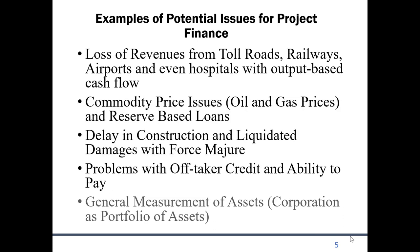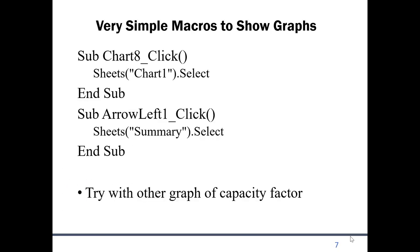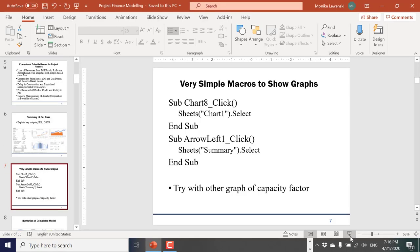Here are some issues from the current crisis we can model: revenues, commodity prices, delays, problems with off-takers, and asset values. I'm going to explain some of the key outputs - the IRR measure of value and the DSCR. This is what we're going to end up with on the summary page.